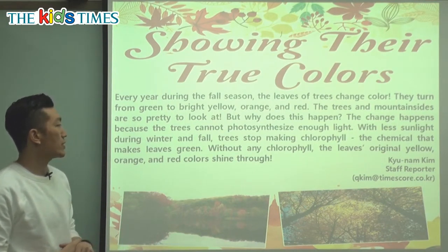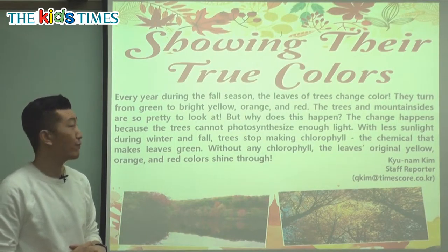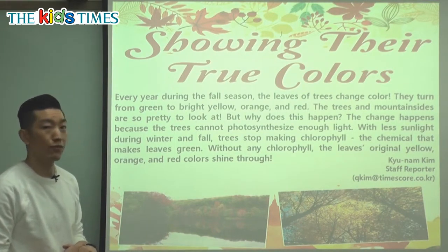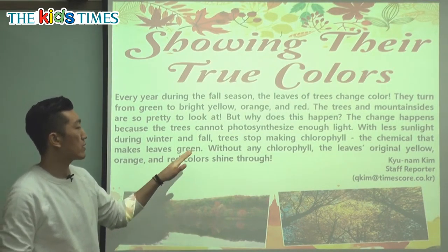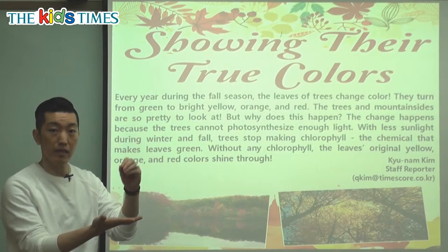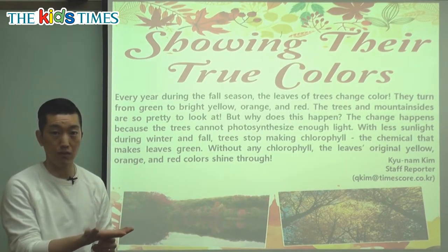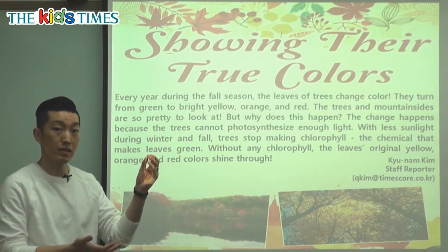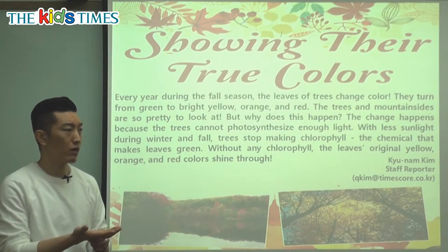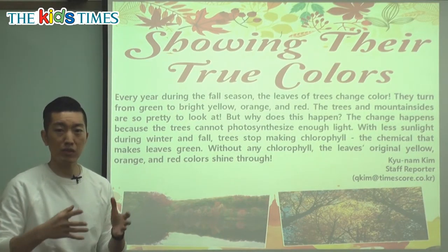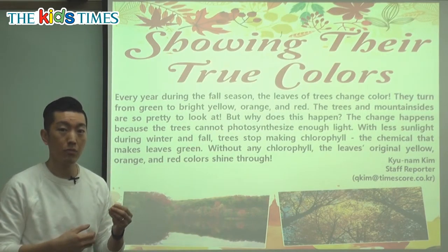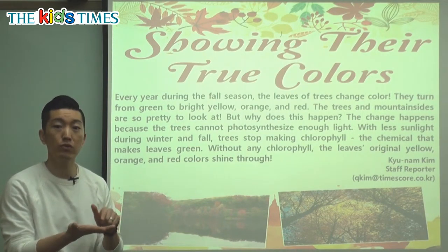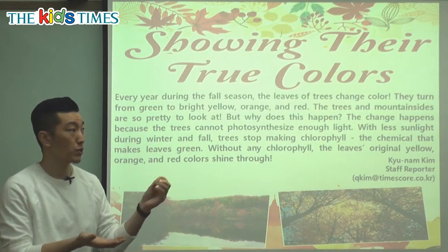The change happens because the trees cannot photosynthesize enough light. Photosynthesis is the process where the leaf takes the sunlight and is able to make food by itself — taking the light and making food. The plants have like a built-in kitchen. Unlike you and me, who have to go find food and eat it, the leaves make food right there on the leaf.